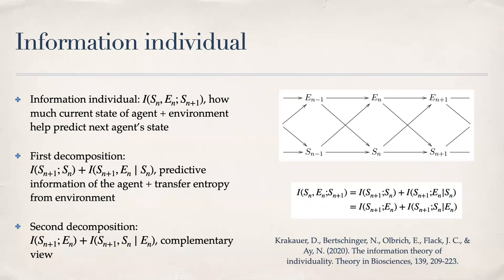The idea is to study how much of the future of the system is determined by either the environment, the past of the system, or a combination of the two. We decompose the mutual information between the future of the system S_{n+1} and both its past S_n and the environment E_n into different components. The first quantity — predictive information — tells us how much a system is able to predict itself without input from the environment.